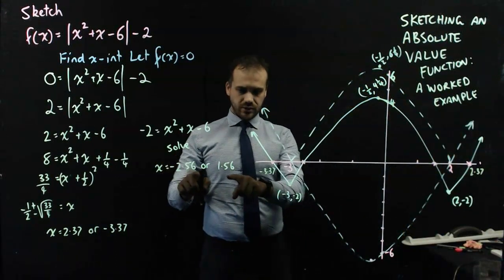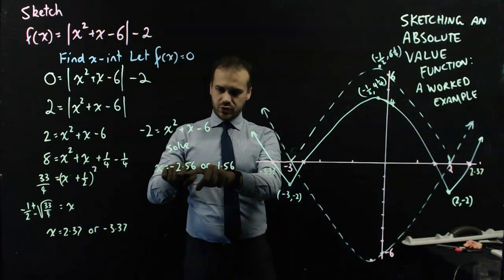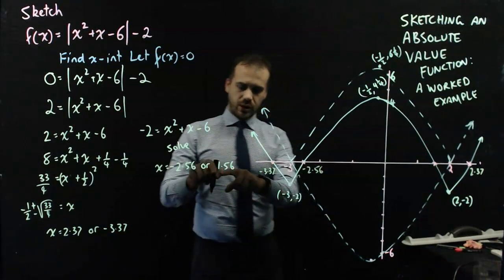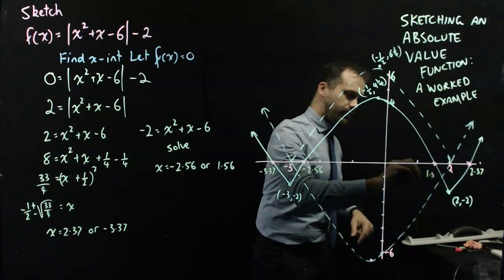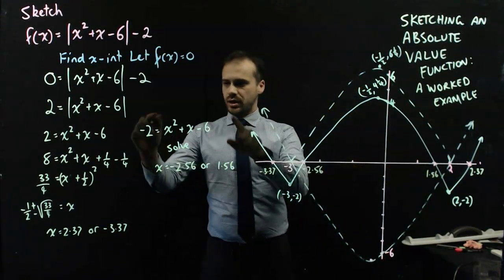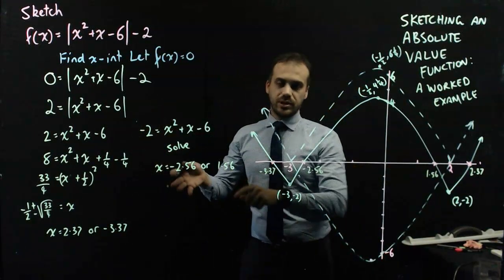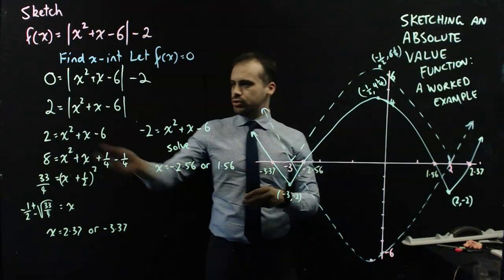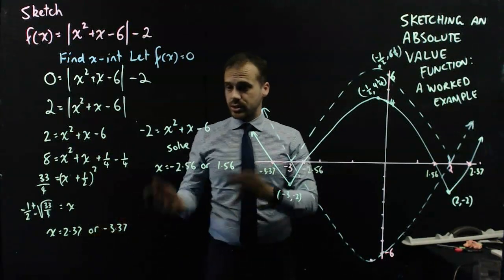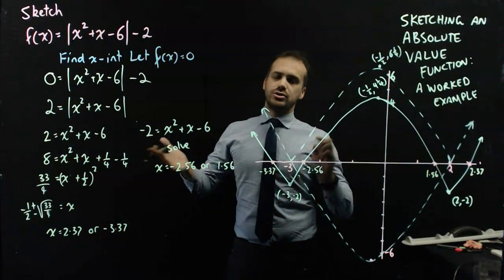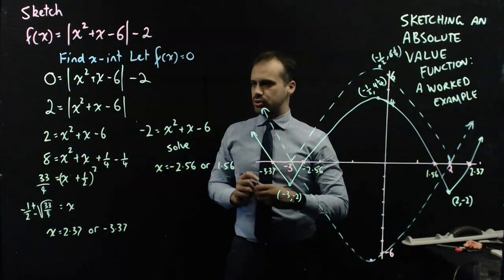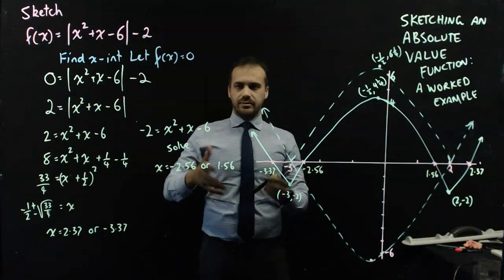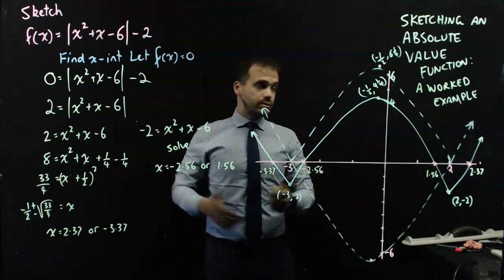So negative 3.37 and 2.37 are marked there. And then I have 2 other answers: negative 2.56, which makes sense here, and 1.56 here. I got a bit lazy — I didn't want to use completing the square, so I used n-solve on my calculator and got 2 answers. You should be comfortable completing the square, using the quadratic formula, or factorising if they factorise neatly — which these don't.